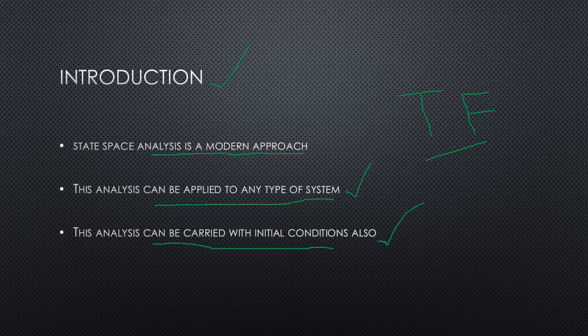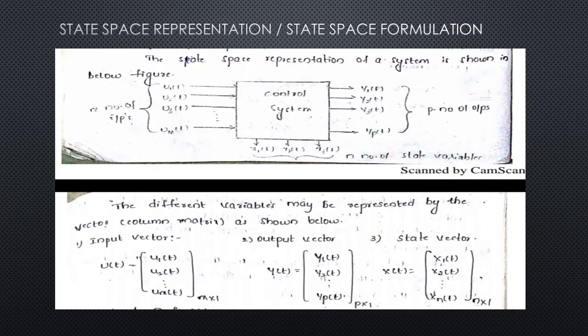When compared with the transfer function analysis, there are some advantages in state space analysis. The advantages of state space analysis over transfer function analysis are: it can be applied to any type of system, it can be carried with the initial conditions, and it is the modern and advanced method which is a powerful technique for the analysis and design of control systems.